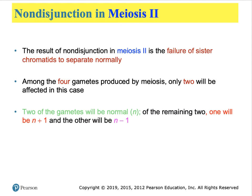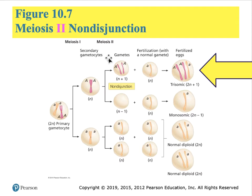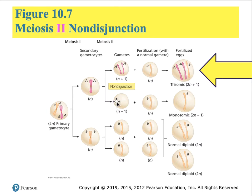Meiosis has a second stage, and if non-disjunction occurs during meiosis II, the consequences are different—only the daughter cell in which non-disjunction takes place is affected, while the other branch develops as normal. As shown in figure 10.7, non-disjunction in meiosis II affects only certain daughter cells. Those developing normally, when fertilized by normal gametes, produce normal diploid individuals. But the top branch can produce a trisomic condition, and the lower branch a monosomic condition.